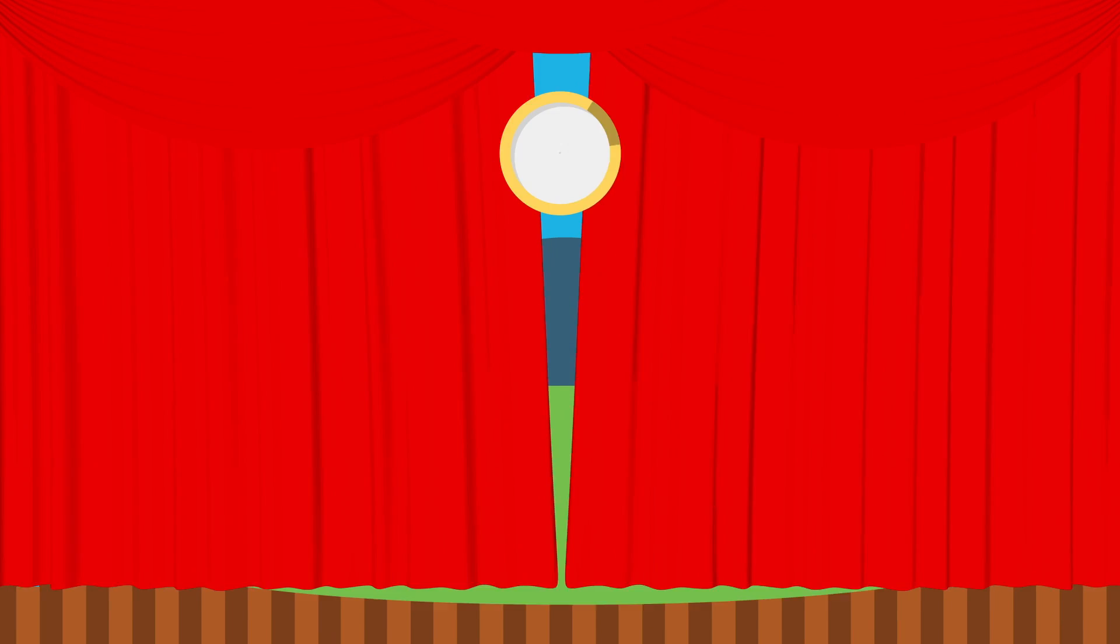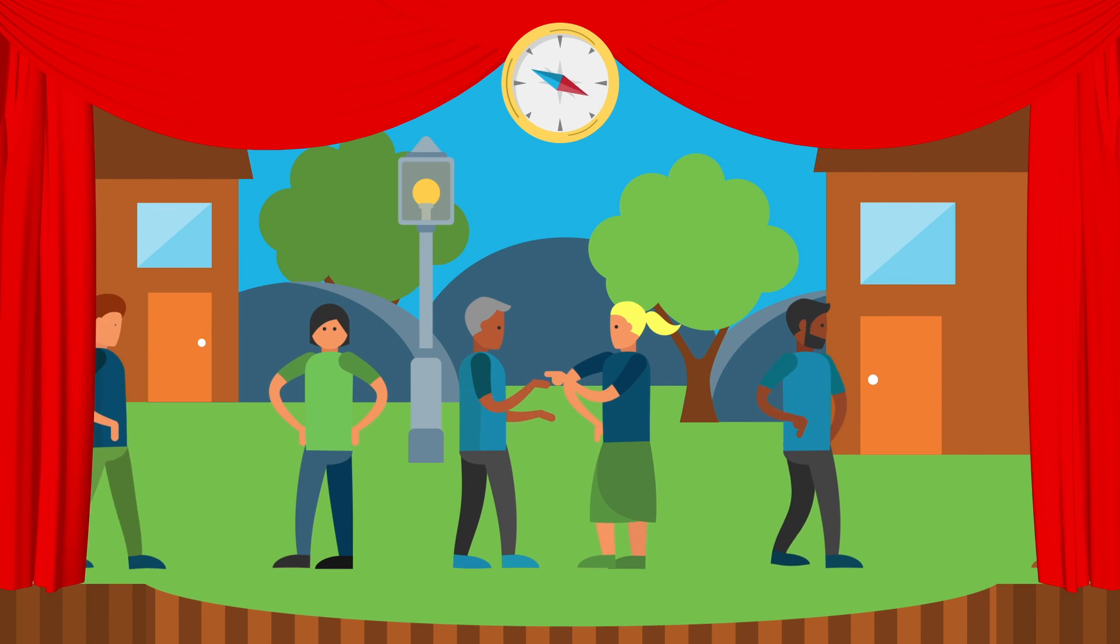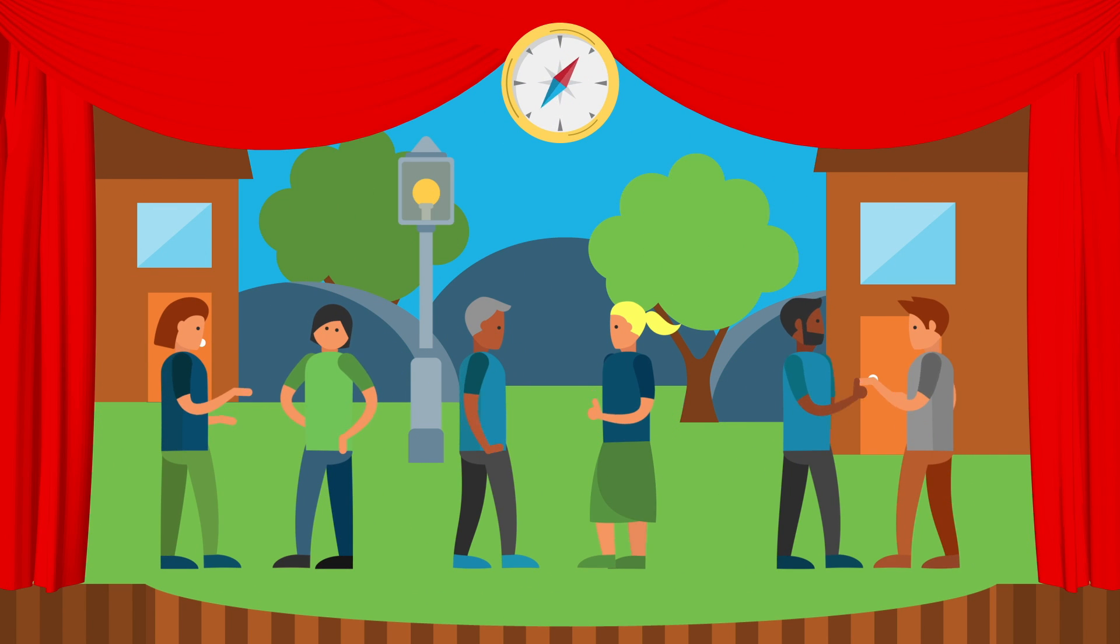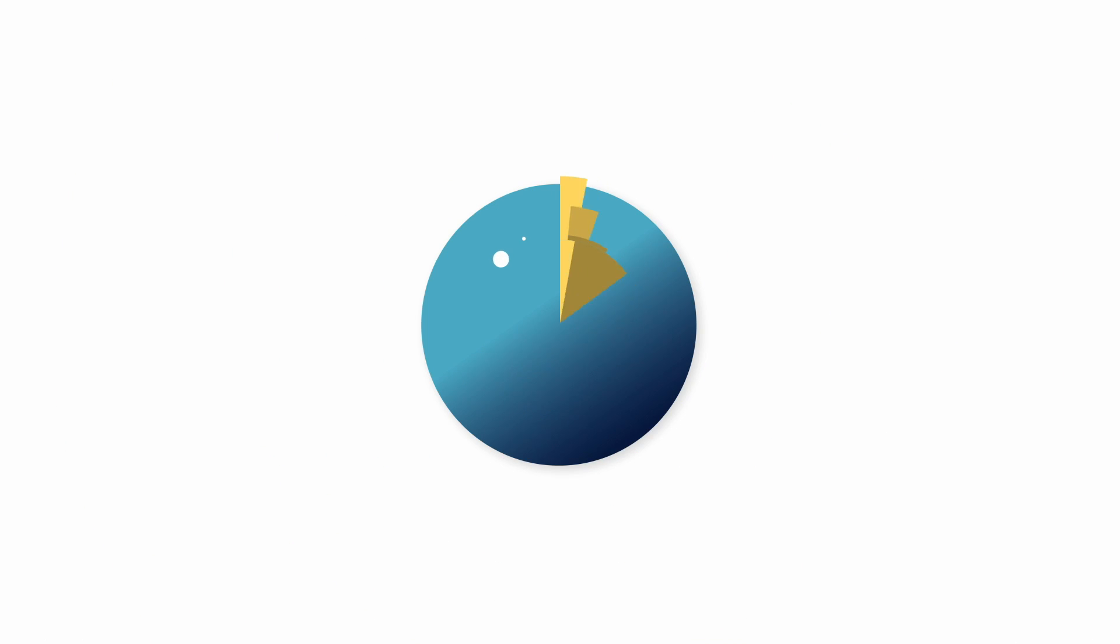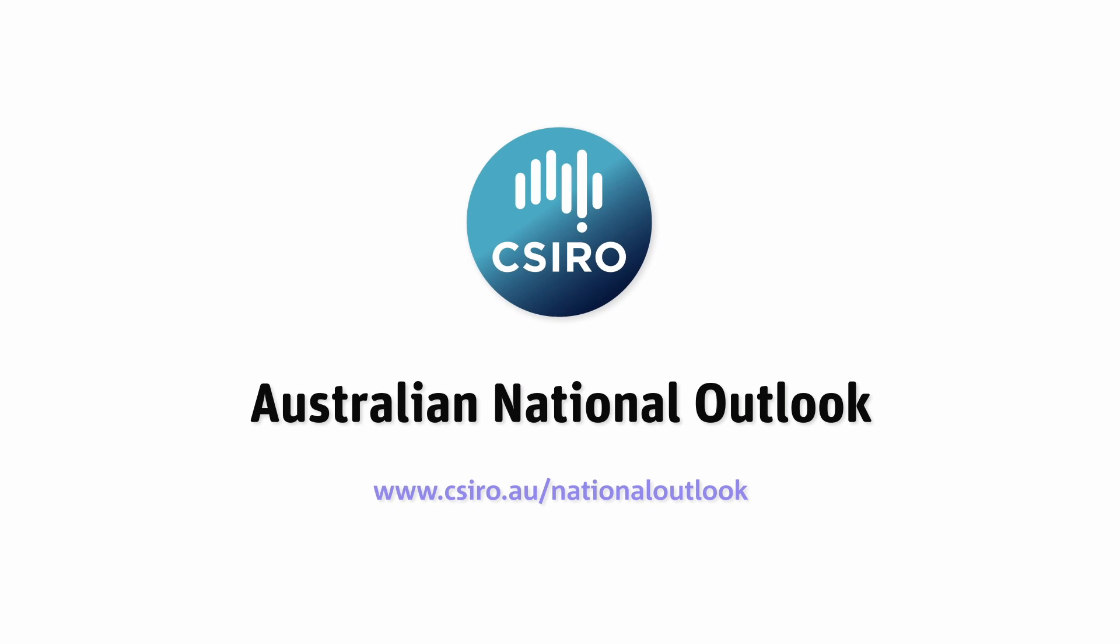The stage has been set for a national discussion about the kind of future that would best serve all Australians and the choices that we'll need to make to get us there. CSIRO's Australian National Outlook helps navigate the future so that we can enhance Australia's long-term prosperity.